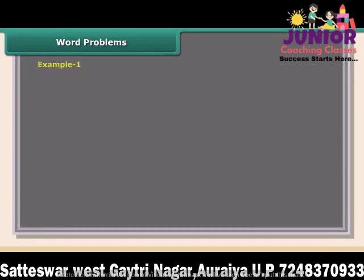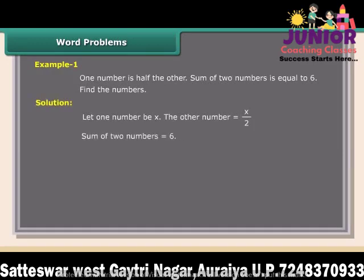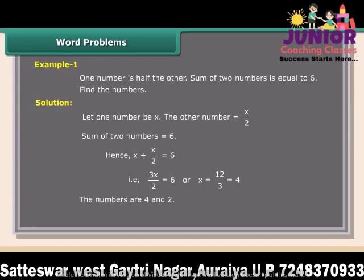Word problems — Example 1: One number is half the other. The sum of two numbers equals 6. Find the numbers. Solution: Let one number be X; the other is X upon 2. X plus X upon 2 equals 6, giving 3X upon 2 equals 6, so X equals 4. The numbers are 4 and 2. Check: 4 plus 2 equals 6. The answer is correct.